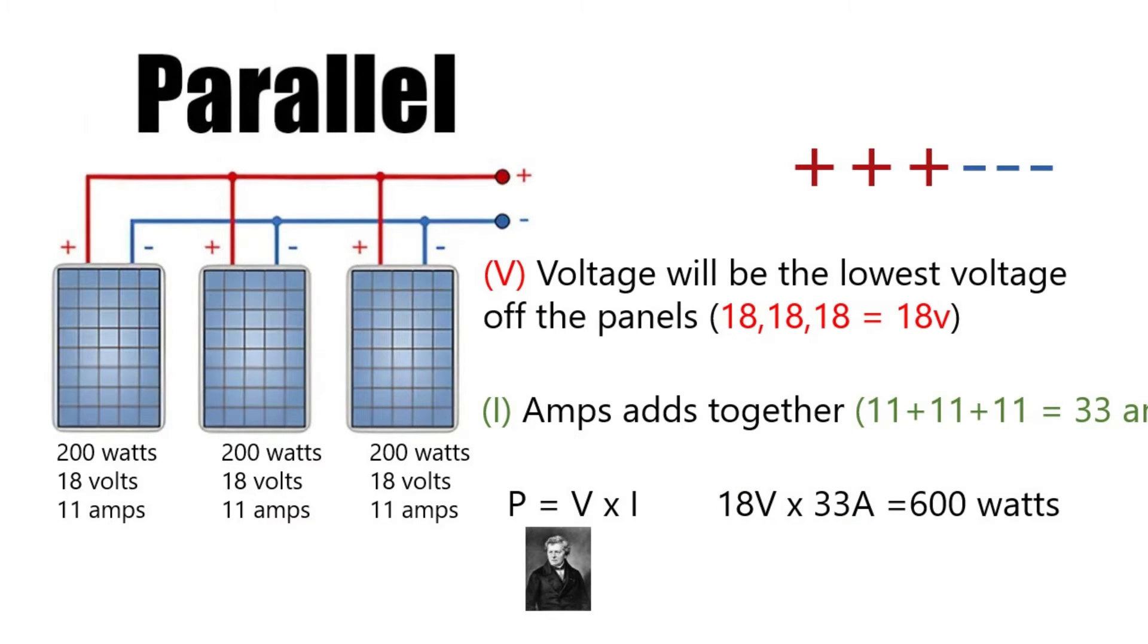If we connect them in parallel, then there's a little bit of difference but the same principle. The voltage will here be the lowest voltage of the three panels. The three panels are all at 18 volts so they will stay at 18 volts even when connected in parallel. But the amps will add together, so there will be 11 amps plus 11 amps plus 11 amps, which is 33 amps. 18 times 33 is 600, and also here you have the exact same output. So when you have the same solar panels, it doesn't matter if you connect them in parallel or in series, you will get the same watts out of the system.